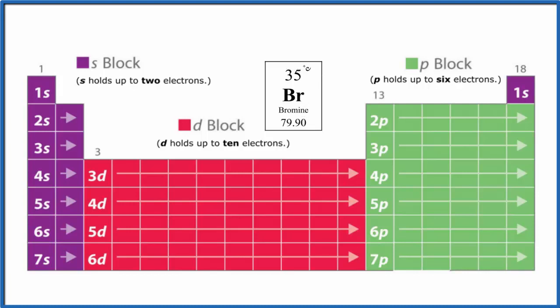Bromine on the periodic table has atomic number 35. The atomic number is the number of protons, which equals the number of electrons for neutral elements. All the elements listed on the periodic table are neutral.